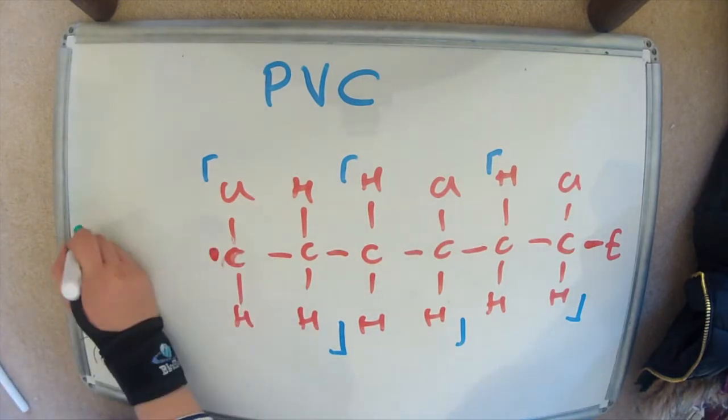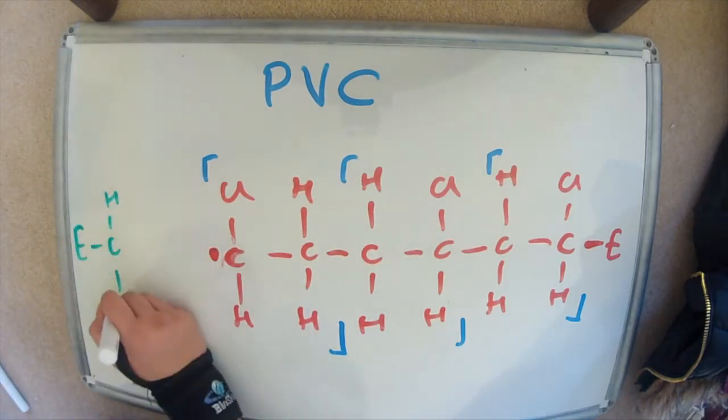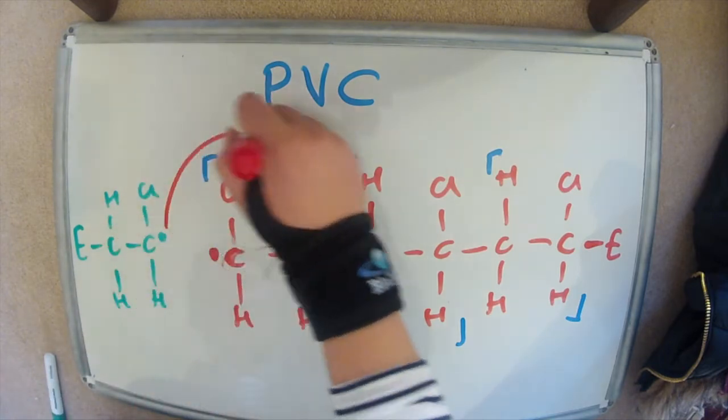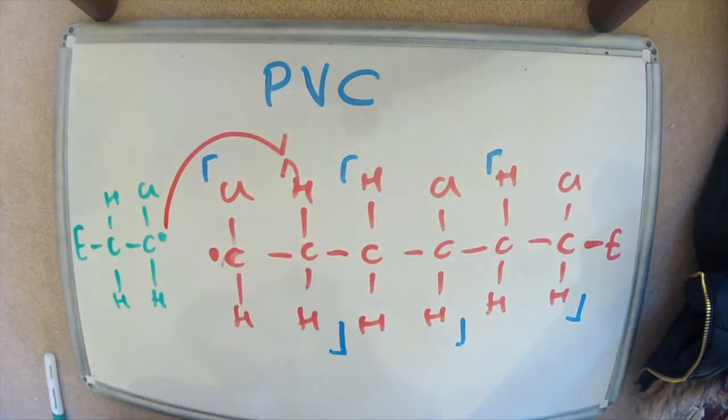And the second method is when the radical on one attacks the hydrogen on the other. And then the electrons from that bond, radical on the carbon on the other side, form a double bond.